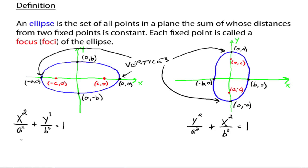Make note that for both situations, as I have it written, a is bigger than b, so a squared is bigger than b squared. When the bigger number is underneath the x squared term and the smaller number is underneath the y squared term, you have a horizontal major axis. When the bigger number is under the y squared term and the smaller number is under the x squared term, you have a vertical major axis. We'll see more of that with examples.